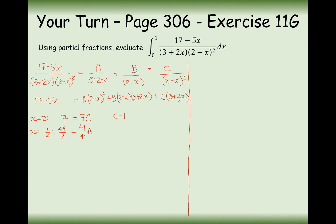The B and C terms cancel out because they both contain a (3 plus 2x) bracket. So A times 49/4 equals 49/2, giving A equals 2.